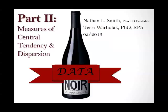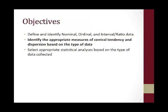This is the second part of three presentations, which I titled Data Noir. They are intended as a review for anyone designing a research study. Part two will focus on the measures of central tendency and dispersion. The objectives for these three presentations are to define and identify nominal, ordinal, and interval ratio data, and identify the appropriate measures of central tendency and dispersion, and select other appropriate statistical analyses based on the types of data collected.